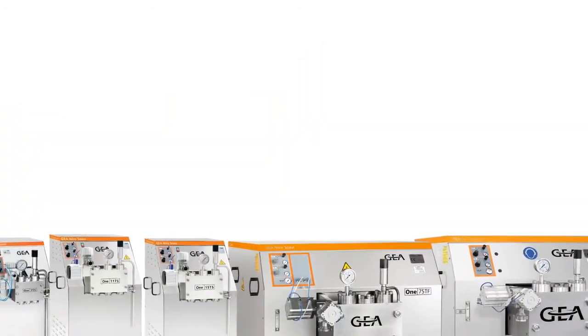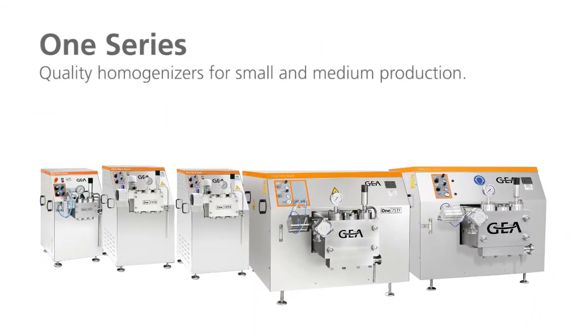Gea Nairosuavi ONE series. Quality homogenizers for small and medium production with flow rates from 300 to 10,000 liters per hour at 250 bar.